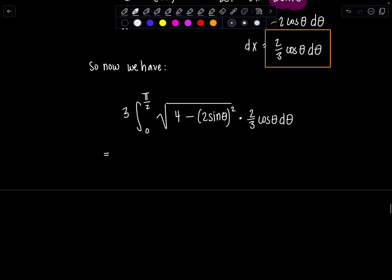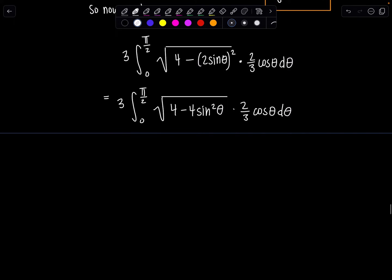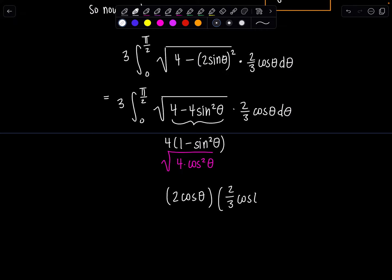How are we doing? Good? Oh, I love it so much. So then now let's clean up a little bit. So we have 3 integral, 0 to π/2, square root. This is 4 minus 4 sine² theta times 2/3 cosine theta d theta. And then remember, the whole point of doing trig sub is so that you can use a Pythagorean identity here. So if I take the 4 out, then I have 1 minus sine² theta, which is 4 times cosine² theta.